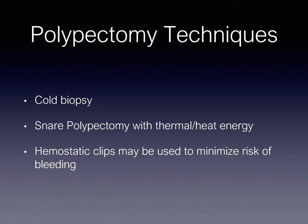First is a cold biopsy. A cold biopsy is a small biopsy device that is passed through the endoscopic channel and one or more bites of the tissue are performed until it appears the polyp is completely removed. For larger polyps, I most commonly perform a snare polypectomy. A snare polypectomy device is passed through the colonoscope channel and a wire or loop is tightened around the polyp. We then use thermal or heat energy to remove the polyp. In both cases, I may elect to place a hemostatic clip — a small staple or clip which is placed on the polypectomy site to minimize the risk of bleeding.